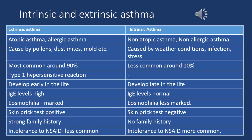Intrinsic and extrinsic asthma: extrinsic asthma is primarily triggered by allergens like pollens, dust mites, and mold. Intrinsic asthma is provoked by factors such as weather conditions, infections, and stress. Extrinsic asthma is more prevalent and typically manifests early in life, while intrinsic asthma tends to develop later. Elevated IgE levels are observed in extrinsic asthma, contrasting with lower IgE levels in intrinsic asthma. Extrinsic asthma displays significant eosinophilia, and skin prick tests yield positive results for allergens, whereas intrinsic asthma shows negative findings. Extrinsic asthma shows a strong familial association, while intrinsic asthma lacks such a clear link.